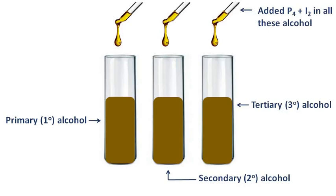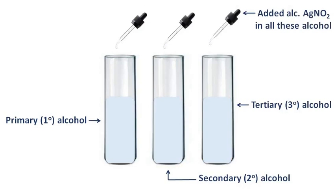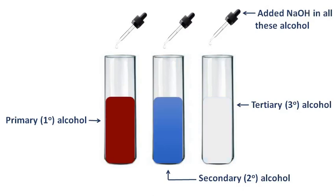Then this treated solution is further treated with silver nitrite to produce the nitroalkane, as shown in the figure. Nitrous acid is then added to the treated solution as shown in the figure. Finally, the solution is treated with sodium hydroxide as shown in the figure, and we can now see three different colors for primary, secondary, and tertiary alcohol.